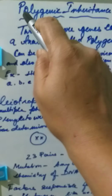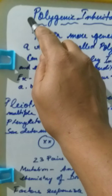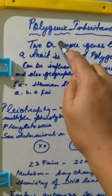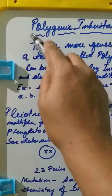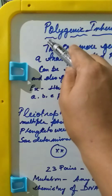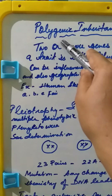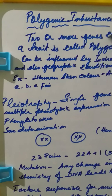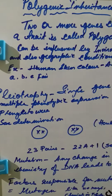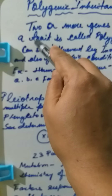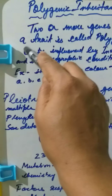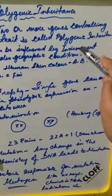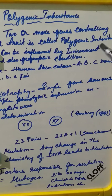Today we will be dealing with polygenic inheritance. Poly means many, genic means gene. So two or more genes controlling a single character is called polygenic inheritance.